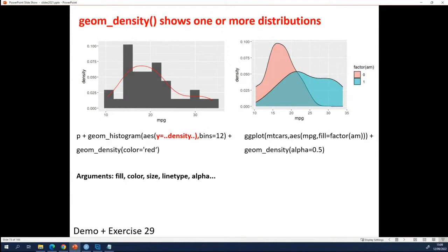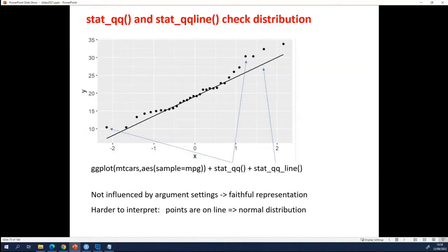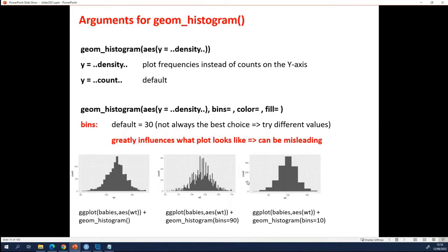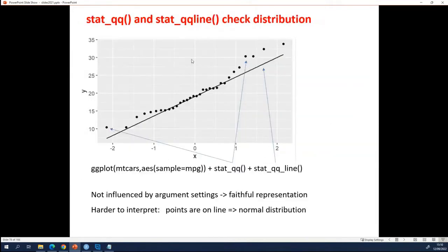The fact is that in contrast to the histogram, this Q-Q plot is not dependent on any settings of any arguments. Where the setting of bins greatly influences what you see. The Q-Q plot is always the same. It's what it is. That is the good thing about it.